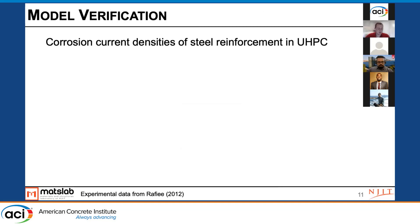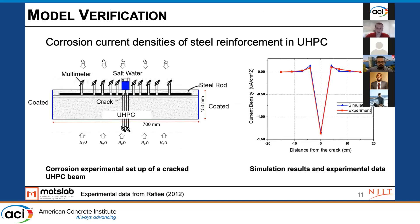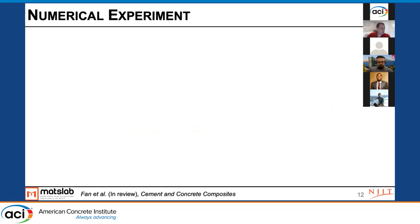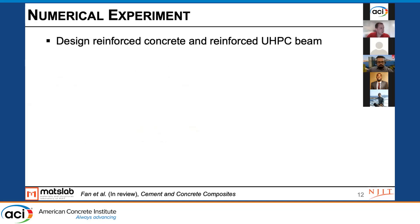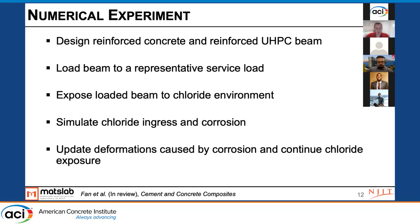We did a model verification on some of this. There's a corrosion experimental setup of a cracked UHPC beam exposed to salt water and oxygen. What you're looking at is differences between simulation and experiment in terms of distance from where the crack is and current density on the y-axis — we're able to predict some of those things. The numerical experiment I'd like to demonstrate involves a brief comparison showing the potential advantages of how a UHPC system can perform compared to regular concrete. We designed a reinforced concrete and reinforced UHPC beam, loaded those beams to representative service loads, then exposed the loaded beam to a chloride environment, simulated chloride ingress and corrosion, and updated deformations caused by rust expansion, continuing that loop.